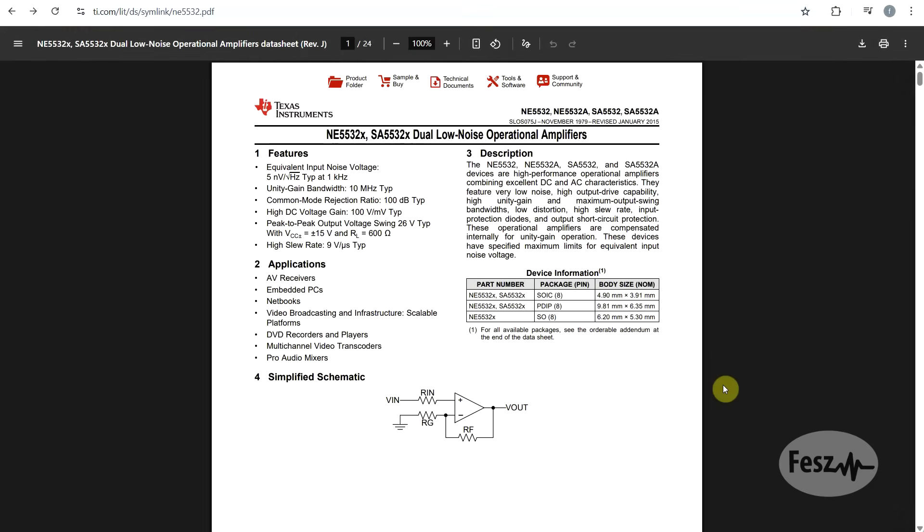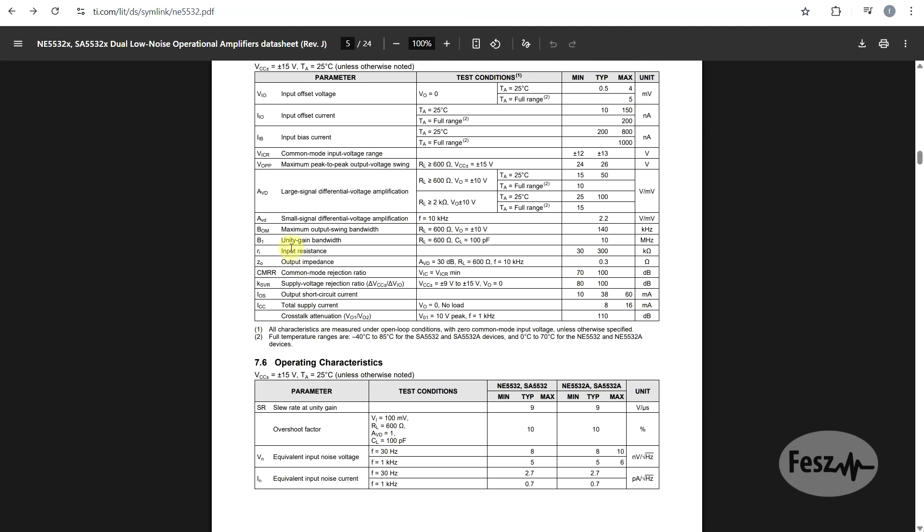Before finishing, let's look at some datasheets and the parameters contained to get a better idea of what can be found and what to expect. So first, if we come back to the initial NE5532 datasheet and look at the unity gain bandwidth and slew rate, you might think that if we need a faster slew rate, so if we want more than 9V per microsecond, we should be looking for a higher frequency op-amp, so something that has more than 10 MHz of bandwidth. But that is not necessarily the case.